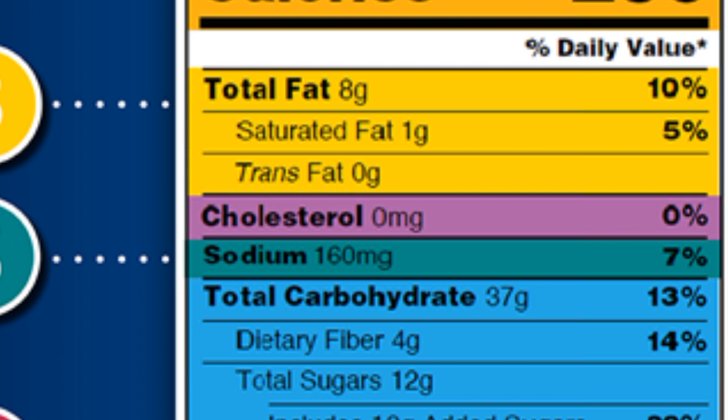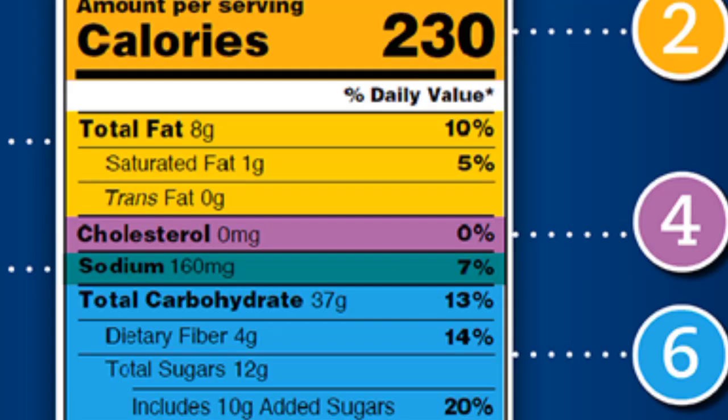Third, total fat: this is the amount of bad fats such as saturated fat and good unsaturated fat in just a serving. Fourth, cholesterol: this is the amount of cholesterol in a serving of your product. Sixth, this is the amount of total carbohydrates in the product.